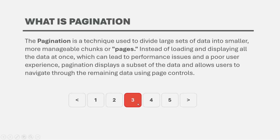Pagination can be implemented from the API side. From the client side, we can request data from the API and tell it to send us only the requested data for a given page. With the request, we can specify that we want data for a specific page number and, for that page, a specific count of records.